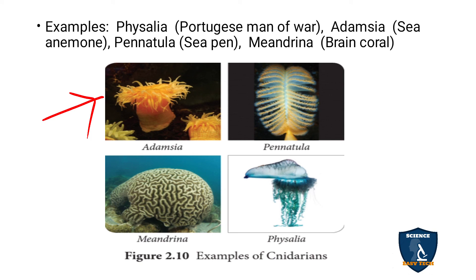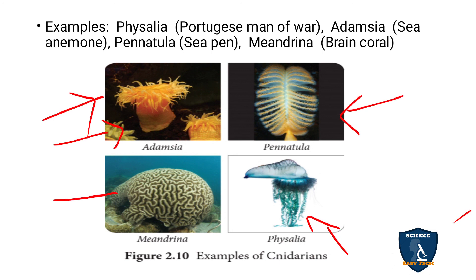Some examples of Cnidarians are: Physalia, which is called the Portuguese man of war — they may ask this in one-mark questions in board exams and NEET. Adamsia is the sea anemone. Pennatula is the sea pen — it looks like a pen. Meandrina is the brain coral — it looks like the shape of a brain. These are some of the examples of Cnidarians.